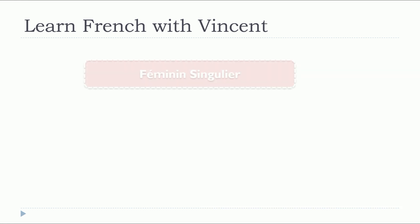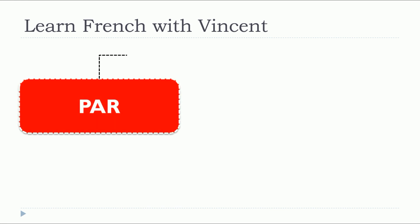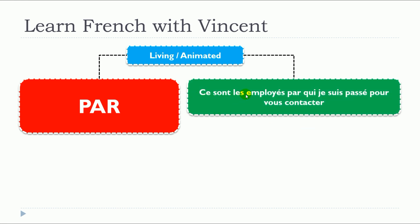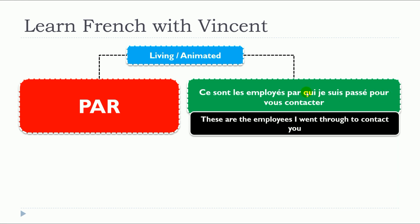And let's finish with the masculin pluriel. PAR is the preposition. For living and animated: Ce sont les employés par qui je suis passé pour vous contacter. As you can see, if we're talking about people it will be extremely simple — you just put your preposition PAR and then QUI, whether it's singular, plural, masculine, or feminine.